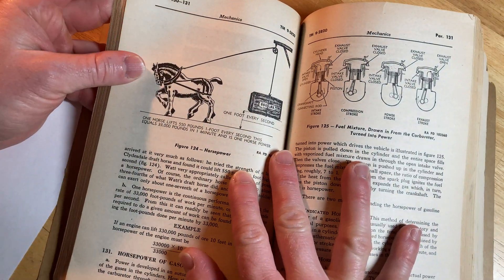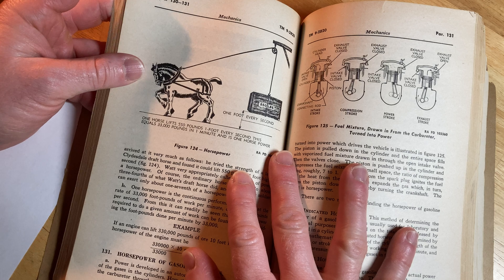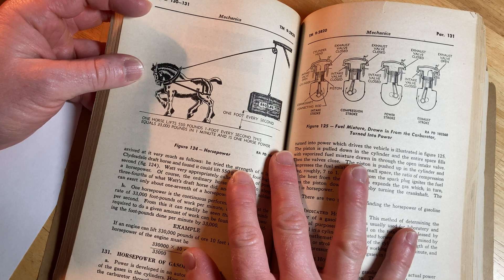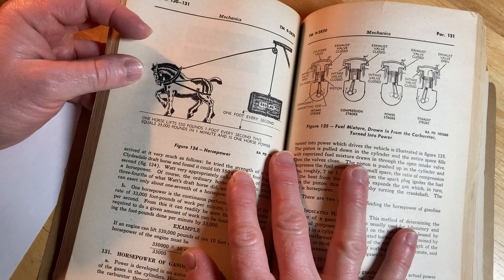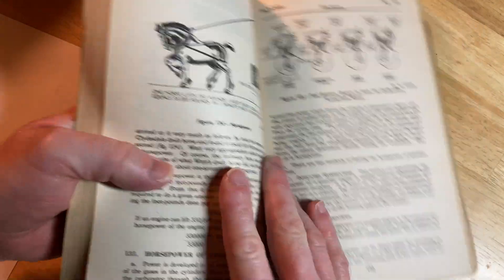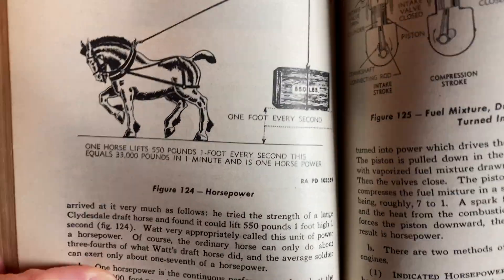One foot every second. One horse lifts 550 pounds one foot every second. This equals 33,000 pounds in one minute and is one horsepower. That's cool. Check that out. Look at that. Make sure you can read that. That's really cool.